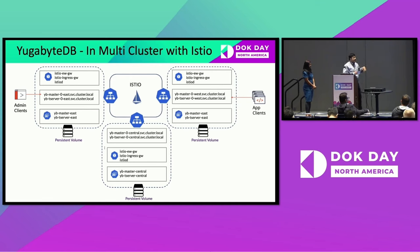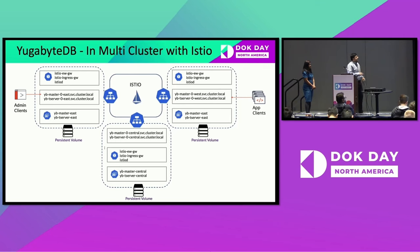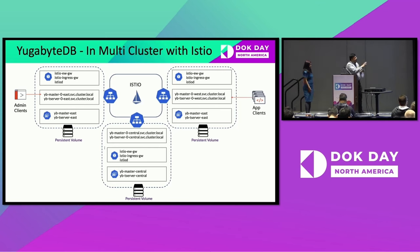We deploy three copies of the YugabyteDB Helm chart — one on each cluster — and set appropriate placement policies in YB master so the database places one replica of data in each region, with a replication factor of three. This means if one region goes down, database availability is still maintained and application availability is unaffected. YugabyteDB's smart clients can transparently load balance or move traffic to another region automatically, providing fault tolerance in the event of a region failure.